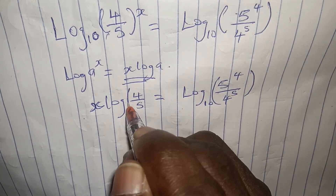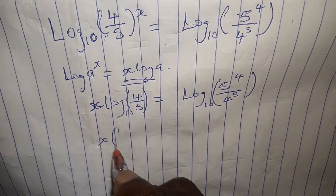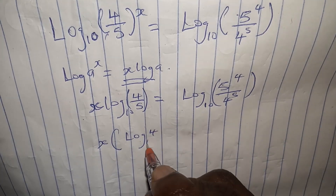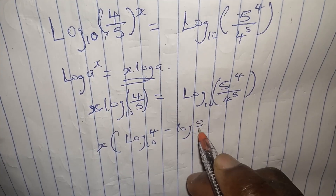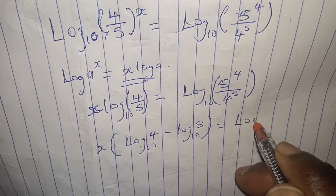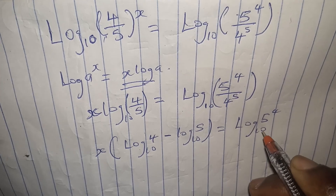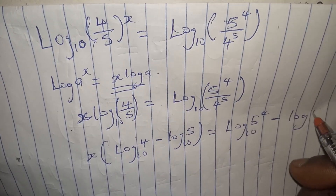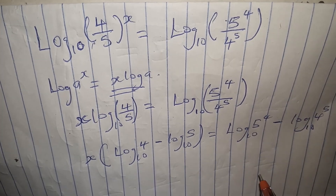Opening the brackets, we have x times (log of 4 base 10 minus log of 5 base 10) equals log of 5 to the power of 4 base 10 minus log of 4 to the power of 5 base 10.